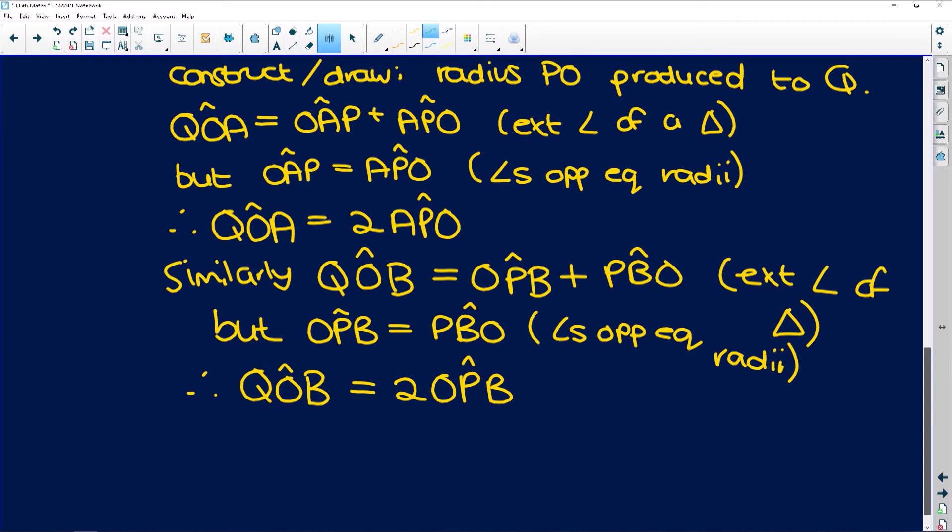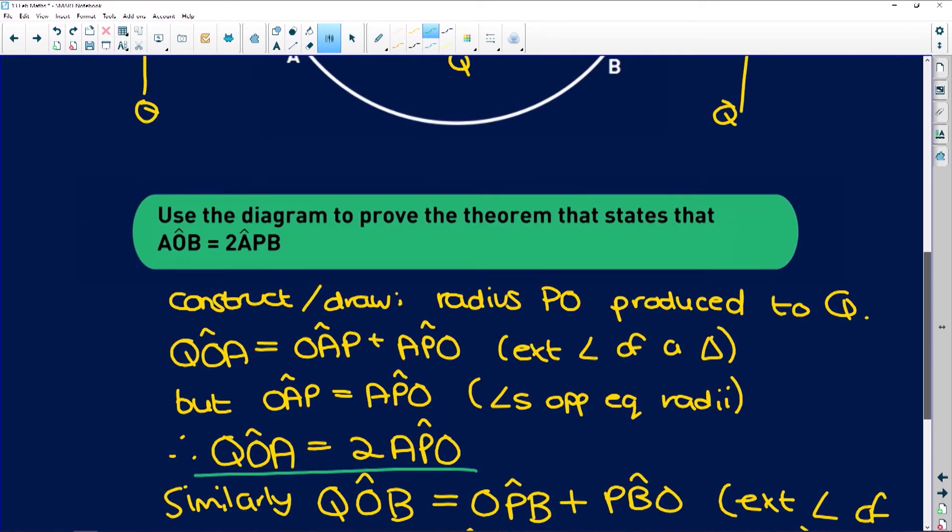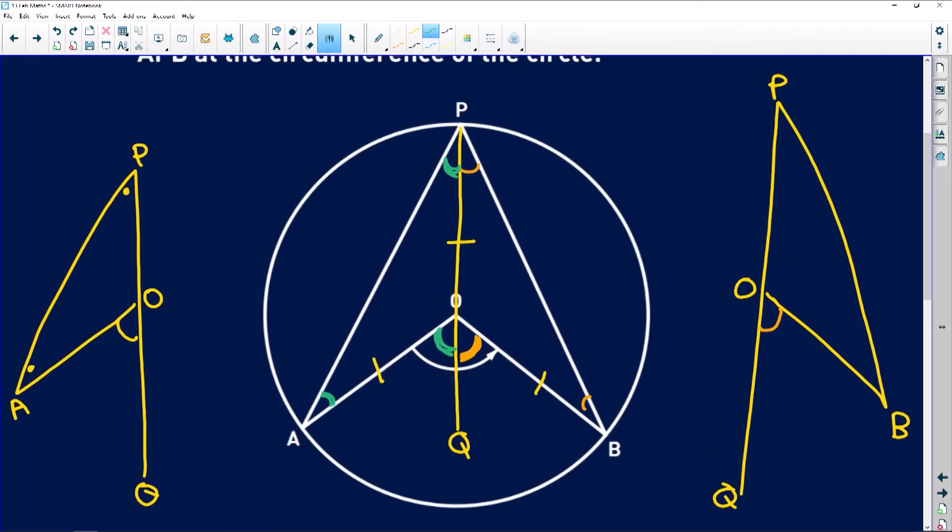So these here are very important pieces of information because we've now established that over here, we've got this angle that is twice that angle on the circumference and this angle that is twice that angle on the circumference. So if we add these angles together, we get the angle at the center.